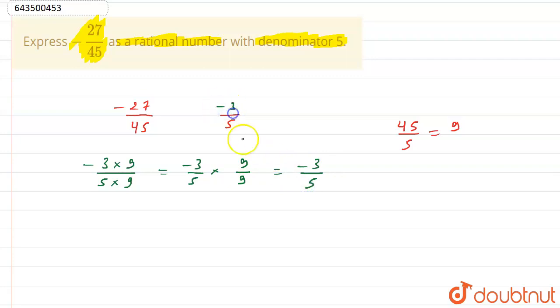So our answer will be minus 3 by 5. We have expressed this rational number in terms of minus 3 by 5. That means with denominator 5 and the numerator is minus 3.